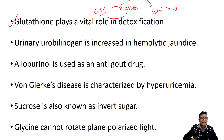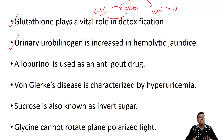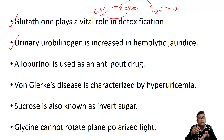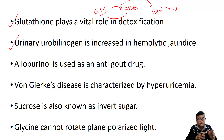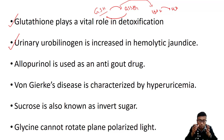The next one: urinary urobilinogen is increased in hemolytic jaundice. In hemolytic jaundice there is hemolysis of the RBC membrane and all the hemoglobin is converted to bilirubin. In this case all the bilirubin is of the unconjugated variety. In other types like obstructive jaundice or hepatocellular jaundice, urine is very dark due to conjugated bilirubin. But here bilirubin is unconjugated, and this unconjugated bilirubin is converted to urobilinogen.